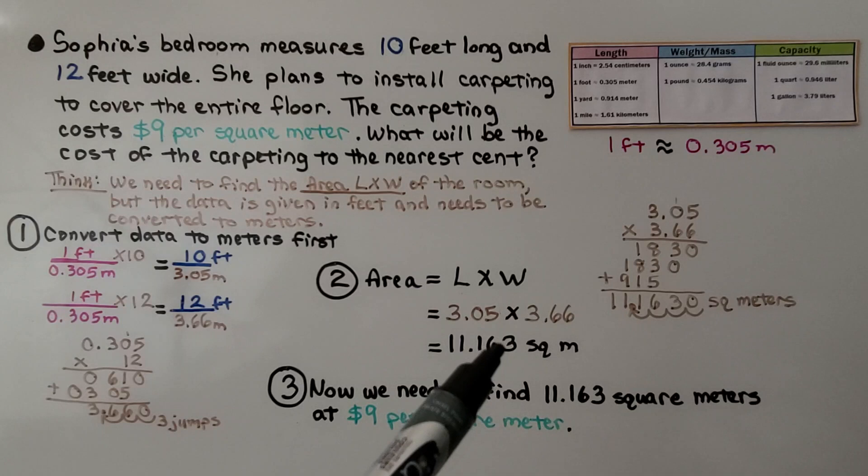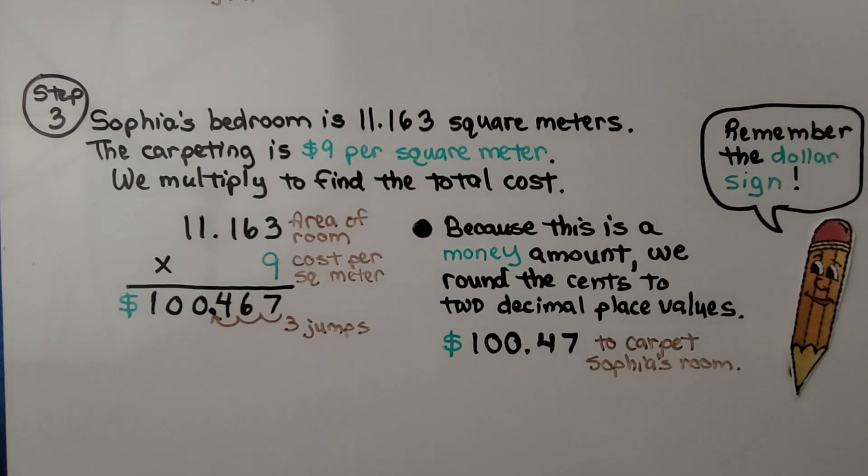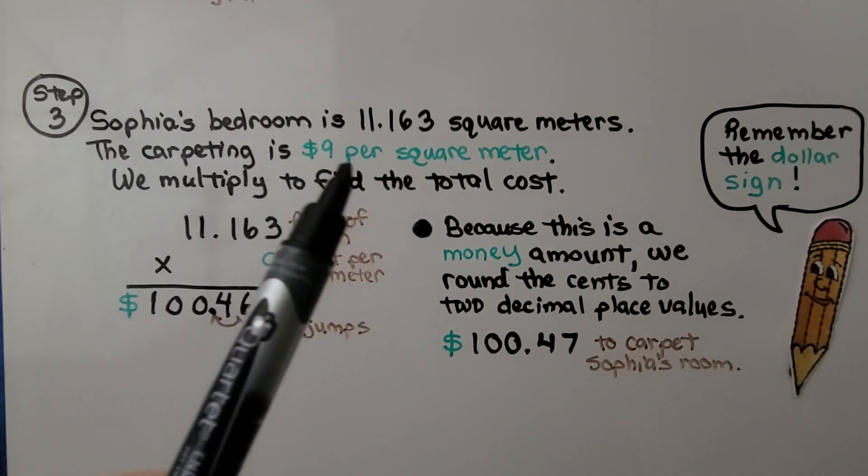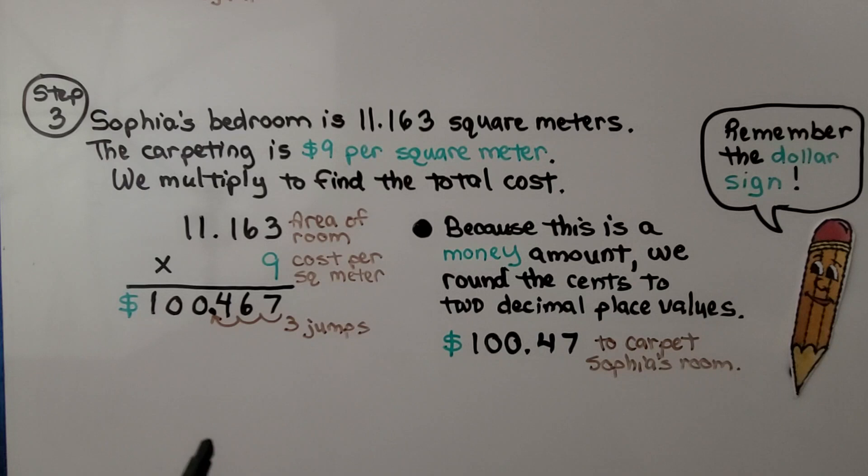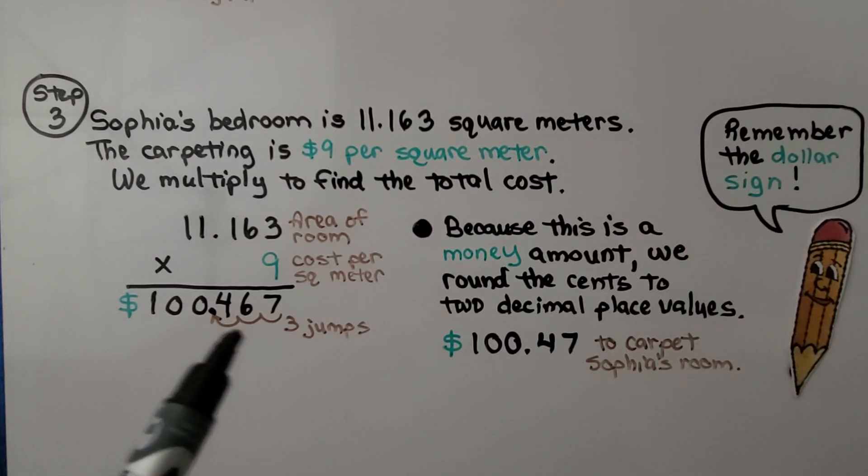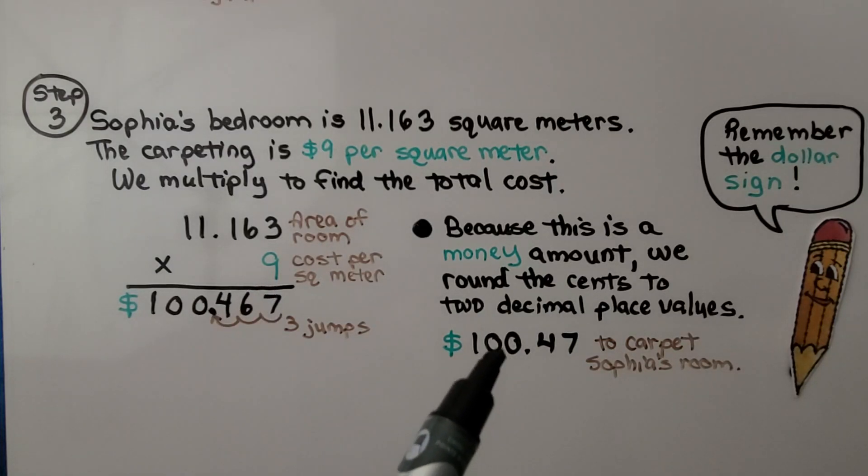Now that it's in meters, we can find $9 per square meter. So for step 3, we now know Sophia's bedroom is 11.163 square meters. The carpeting is $9 per square meter. We multiply to find the total cost. And our answer is going to be in money, so we have to remember the dollar sign. And because it's money, we round the cents to two decimal place values. And this 7 is going to tell the 6 to go up to a 7. We have $100.47 to carpet Sophia's room.